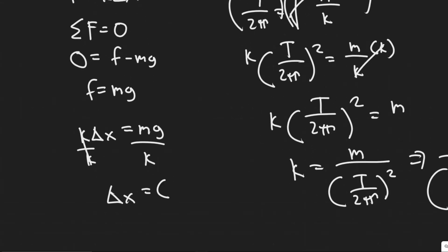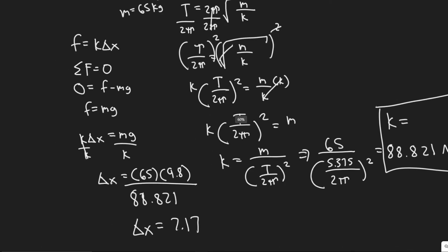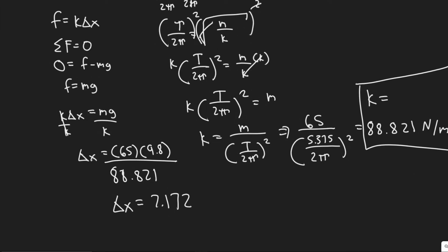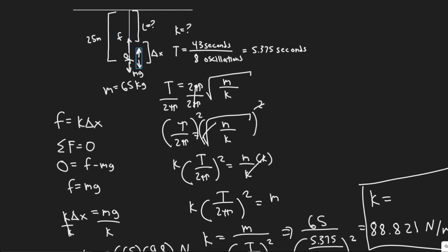So getting Δx, our mass of our person was 65 times g, the acceleration due to gravity, which is a constant, 9.8, divided by k, the spring stiffness constant, which we just solved for, 88.821. So we have 65 times 9.8 divided by 88.821. That's going to give Δx a value of 7.172 meters, since we have newton meters on the bottom here. Because you can see it's newtons over newton meters. So it cancels. So that's how we get the meters. And now we have the Δx.